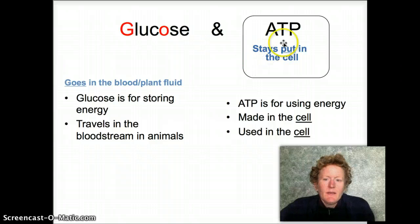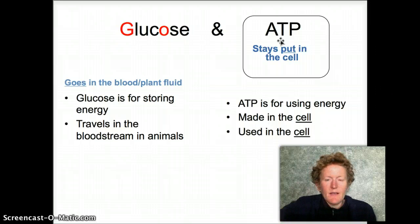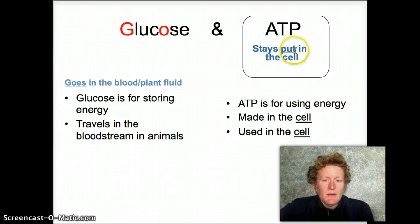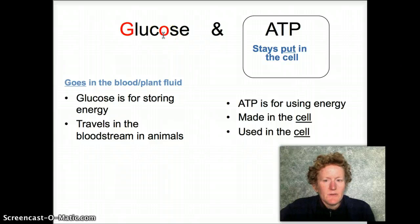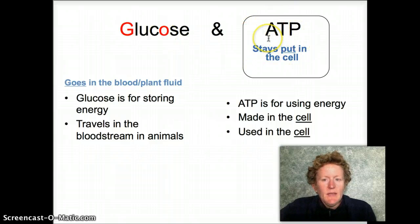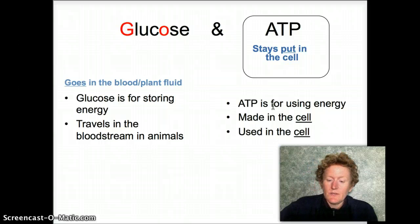The ATP stays in your cell. Glucose comes to your cell through the bloodstream and gets made into ATP, and that ATP is used in your cell. So glucose and ATP are different — glucose travels within the body. That's why glucose goes around the body in the bloodstream. It comes to your cell, gets made into ATP, and that ATP stays in the cell. It's made in the cell, it's used in the cell. It's glucose that travels.